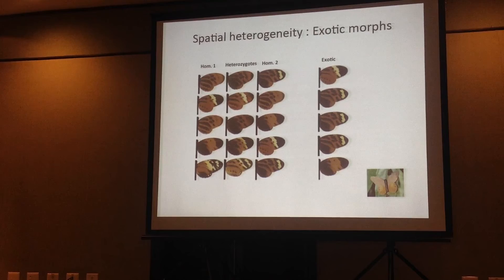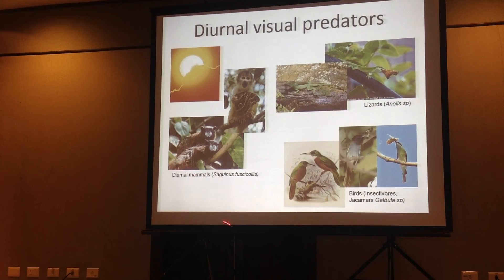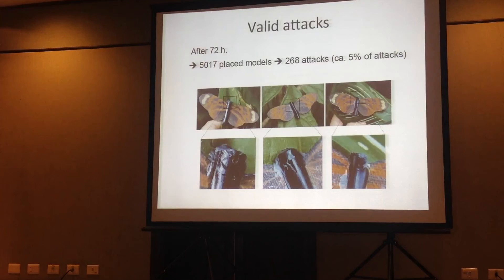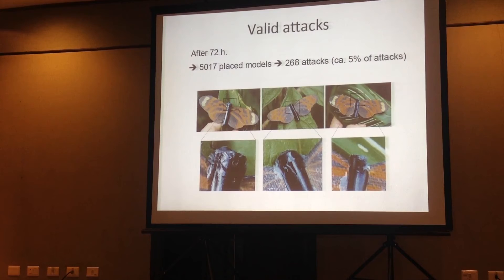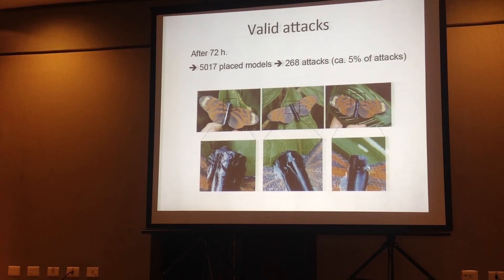In general, we were expecting to find marks from visual predators — small mammals, lizards, and of course birds. We released the models and left them for 72 hours. Once we picked them up, these were the kinds of marks we found. In the end, we released more than 5,000 models and got an attack rate of circa 5%.